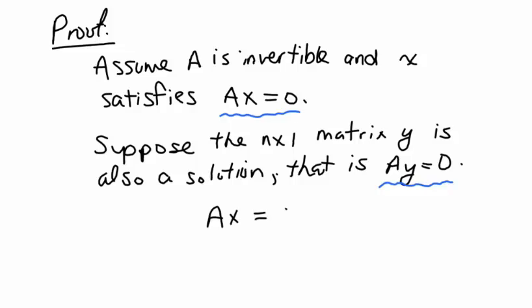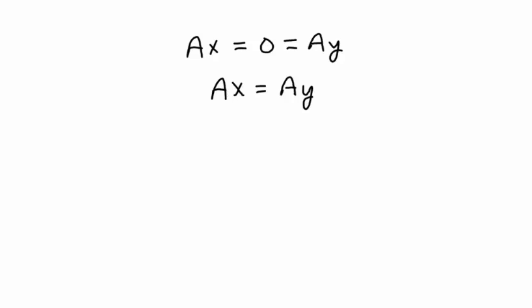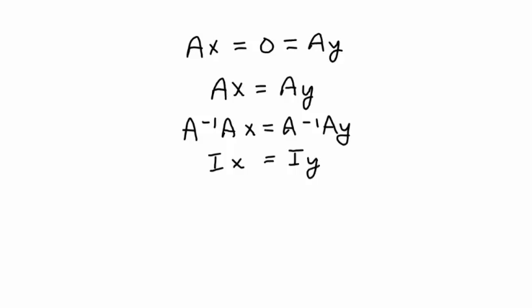This means A times x equals A times y. Since A is invertible, we can multiply both sides on the left by A inverse. We know A inverse times A equals the n by n identity matrix I. So the left side simplifies to I times x and the right side to I times y, giving us the n by 1 vector x on the left and y on the right. Therefore x equals y.